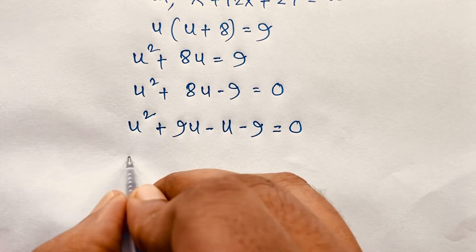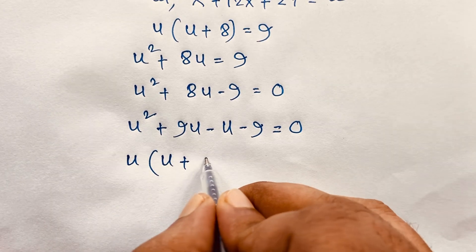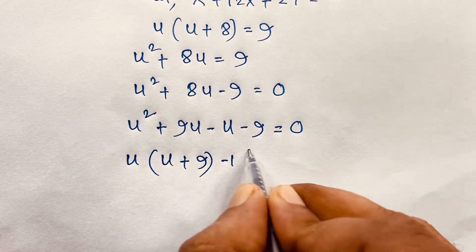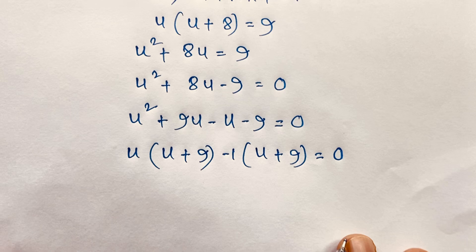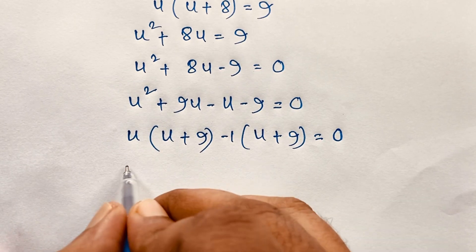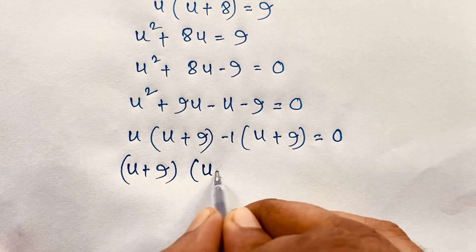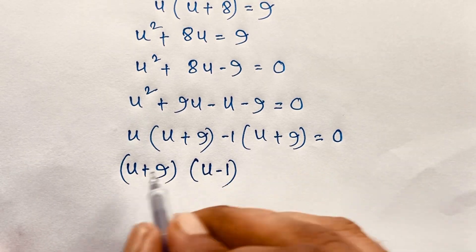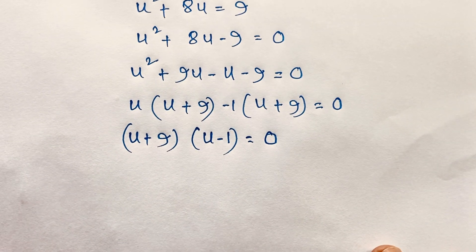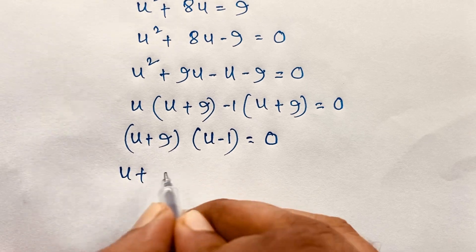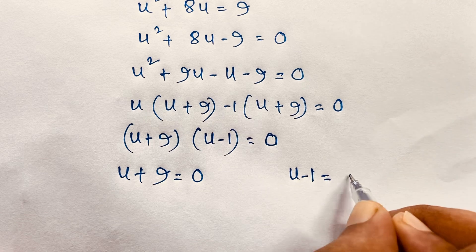Taking u as common from the first two terms gives u(u + 9), and taking −1 as common from the last two terms gives −1(u + 9) = 0. Since (u + 9) is common, we get (u + 9)(u − 1) = 0. So either u + 9 = 0 or u − 1 = 0.